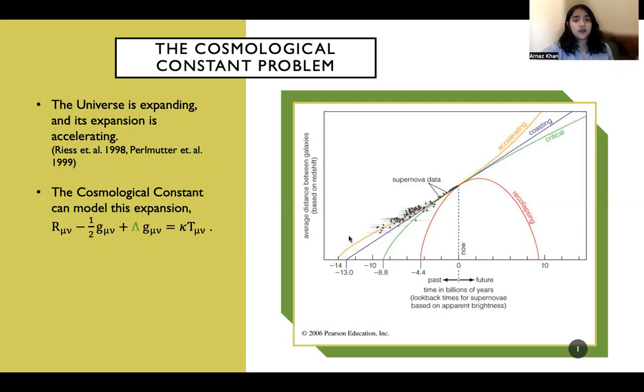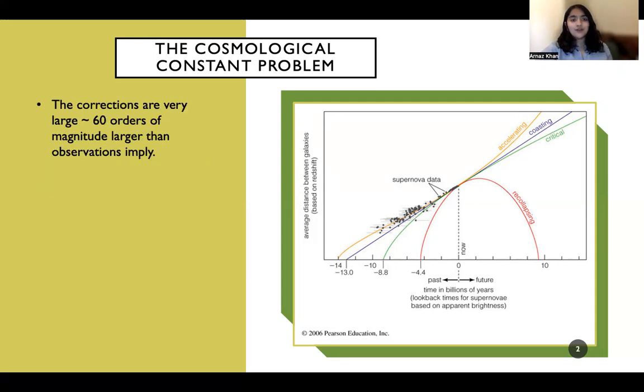The cosmological constant actually receives contributions from the matter sector in the form of vacuum energy. When you calculate this vacuum energy, you also need to add in quantum corrections to it. And it turns out these corrections are very, very large. They can be as much as 60 orders of magnitude larger than observations would actually imply.